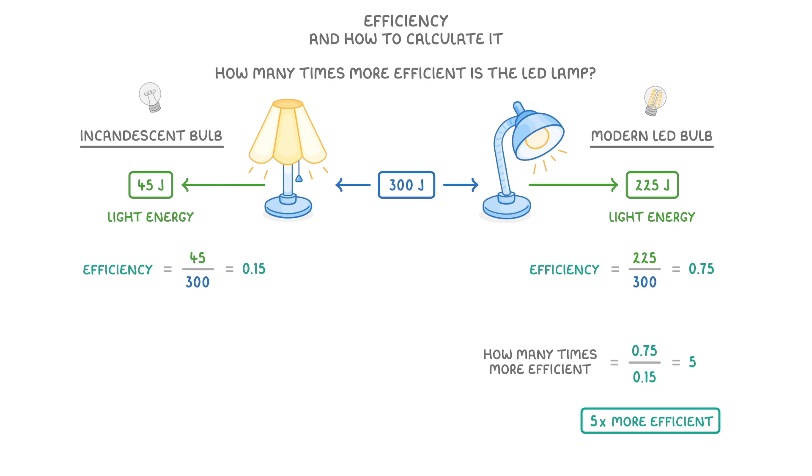If we instead wanted these efficiency figures in percentage terms, we would just multiply them by 100, giving us 15% and 75%. And we could then do 75 divided by 15 to give us 5 again.